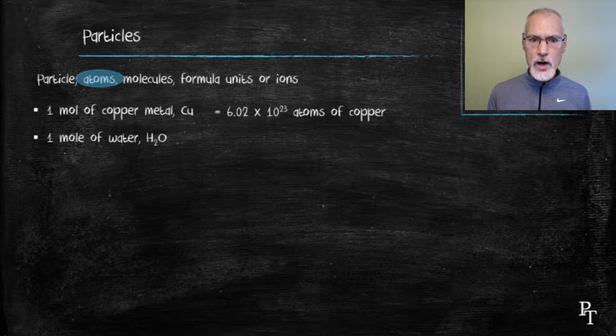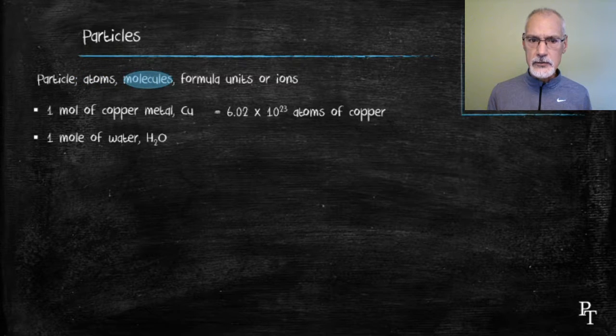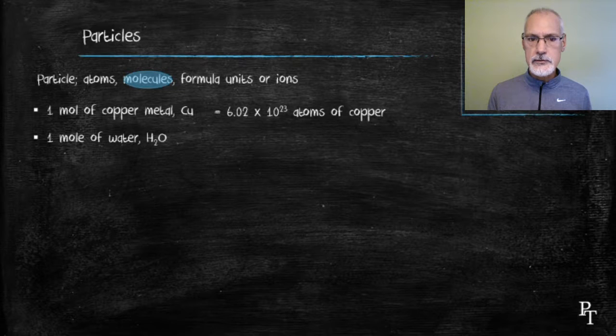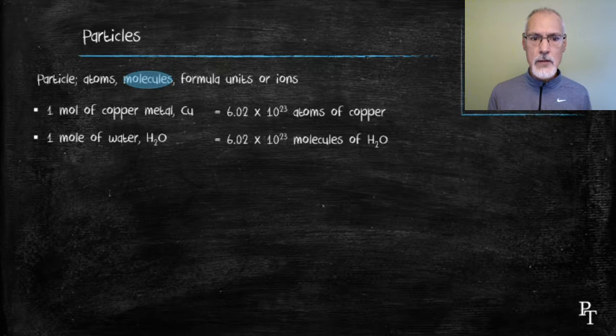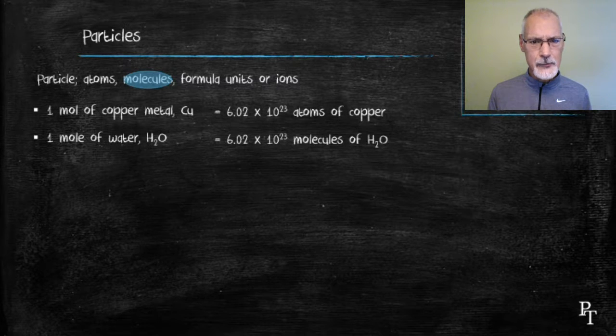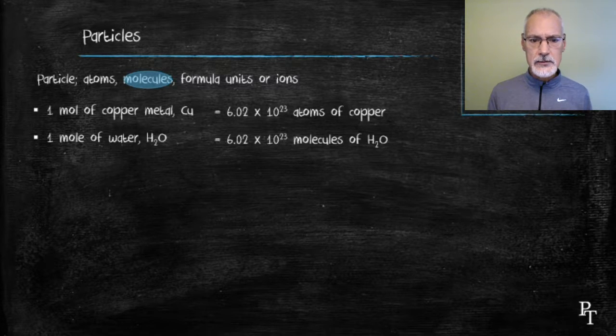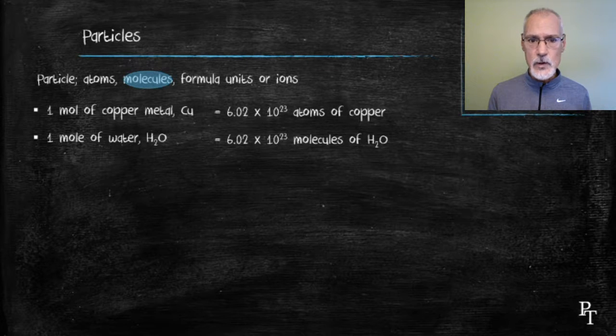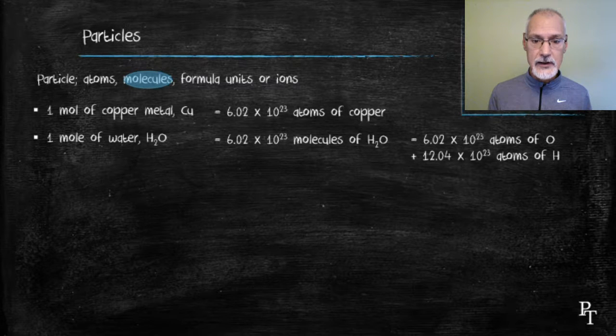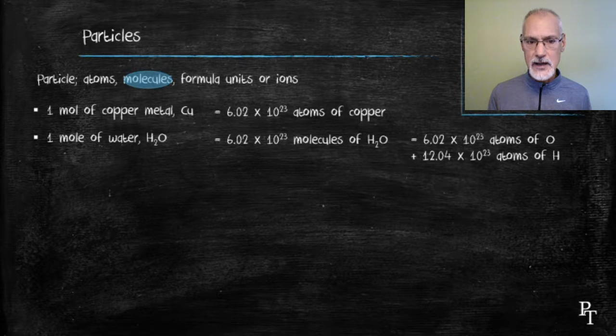If I want one mole of water, water is a molecule. So I would have 6.02 times 10 to the 23rd molecules of water. Now, if I wanted to take that further and consider how many atoms would that be? Well, each molecule of water consists of 2 hydrogens and 1 oxygen. So I would have 1 mole of oxygen atoms and 2 moles of hydrogen atoms.